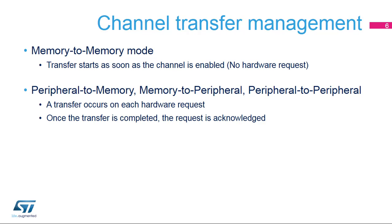Memory-to-memory mode allows transfers from one address location to another without a hardware request. Once the channel is configured and enabled, the transfer starts immediately. When data is transferred from or to a peripheral, the hardware request coming from the selected peripheral is used to trigger the data transfer. Once the transfer is completed, the request is acknowledged.